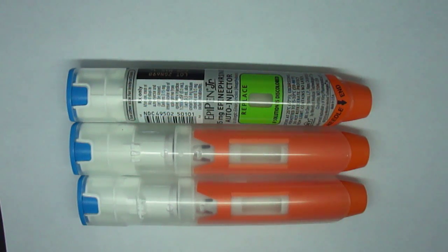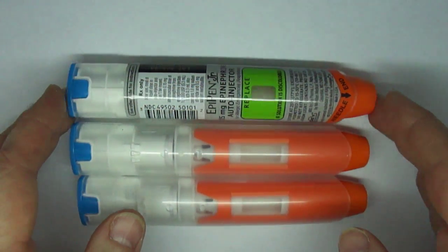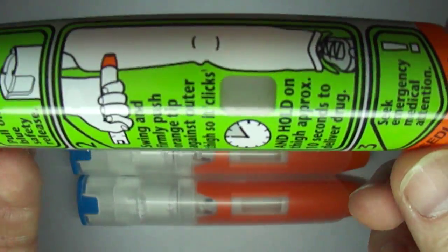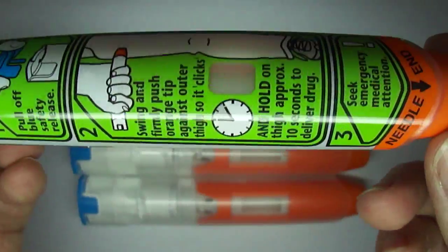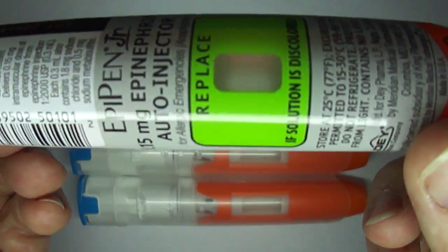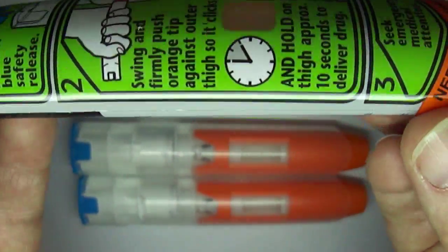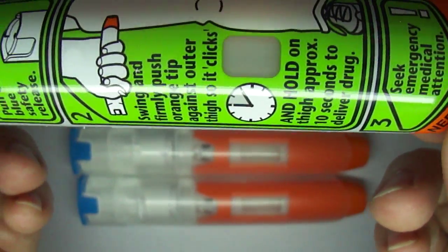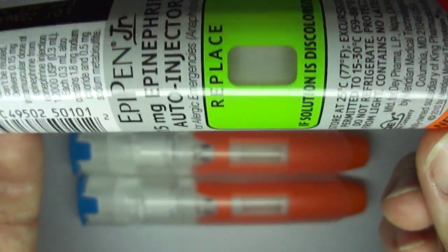Some people have expressed concern when they look at their EpiPen that the window appears cloudy and they are concerned that represents particulate matter. This video demonstrates that this slight cloudiness is normal and in fact represents the plastic covering of the clear glass epinephrine vial.